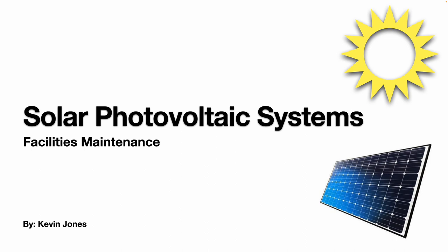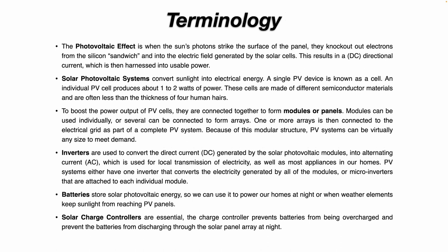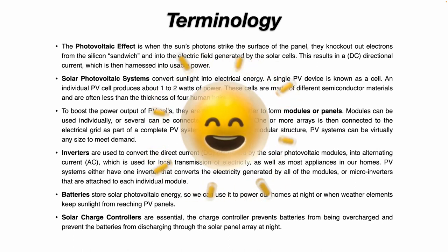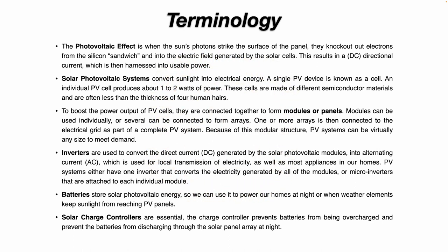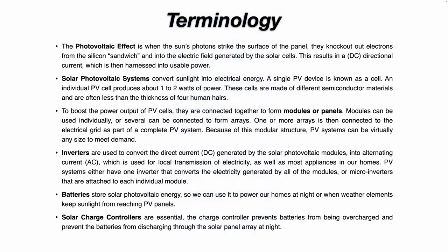Today we're talking about solar photovoltaic systems. First, some terminology. The photovoltaic effect is when the sun's photons strike the surface of the panel. They knock out electrons from the silicon sandwich and into the electric field generated by the solar cells. This results in a DC or directional current, which is then harnessed into usable power.